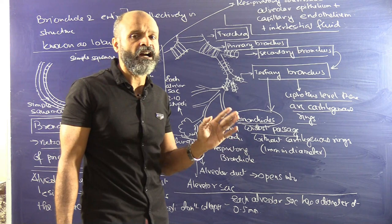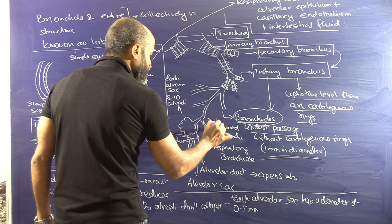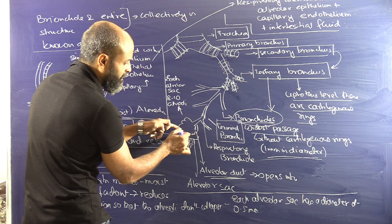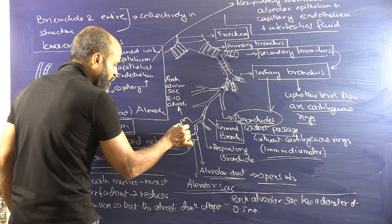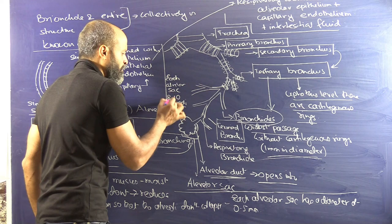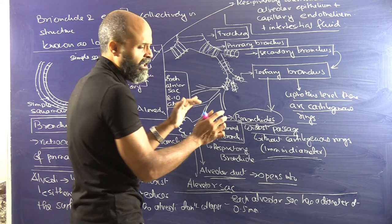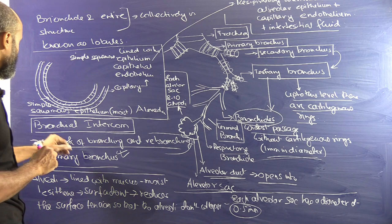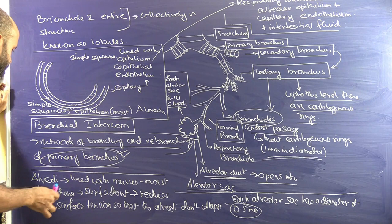The bronchioles are the widest passage without cartilaginous rings. Then we have the terminal bronchi, which open into the alveolar duct, which in turn opens into the alveolar sac. Each alveolar sac has approximately 8 to 10 alveoli. Each alveolar sac has a diameter of approximately 0.5 millimeters. The network of branching and re-branching of the primary bronchus is represented here.